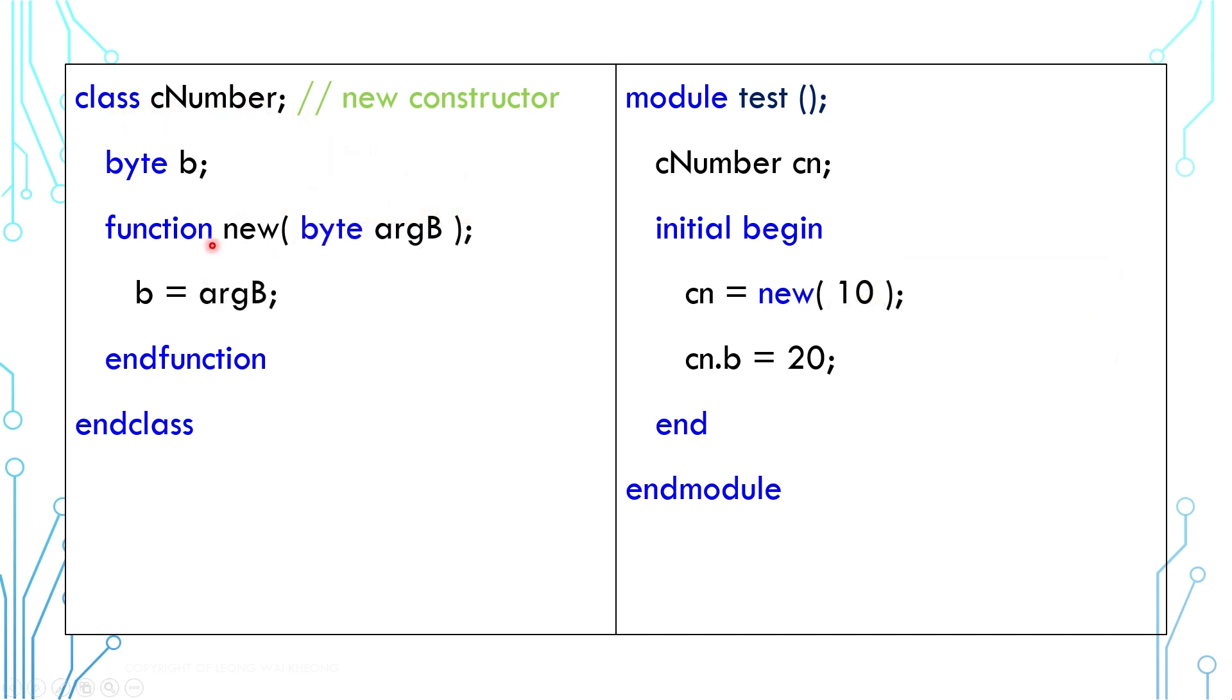We can also introduce arguments into the constructor. In this example, we pass the value 10 to initialize the byte while we are instantiating the class handle.